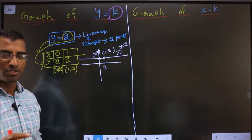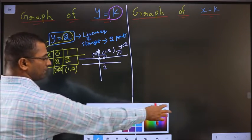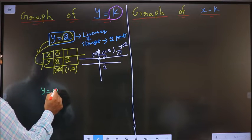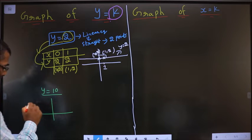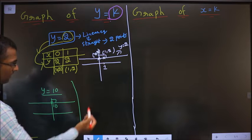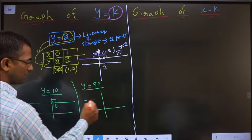Two conclusions you can derive. This line will be a horizontal line, first conclusion. Conclusion 2, y equal to 2, I get a line perpendicular to y-axis. Now, if I draw for y equal to 10, my graph will be a horizontal line passing through 10 and perpendicular to y-axis. For y equal to 90, this will also be a horizontal line passing through 90 and perpendicular to y-axis.